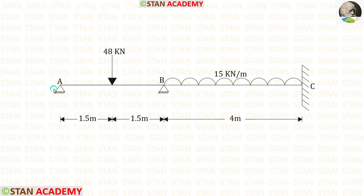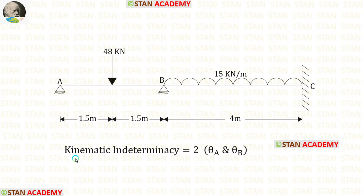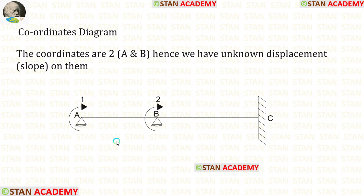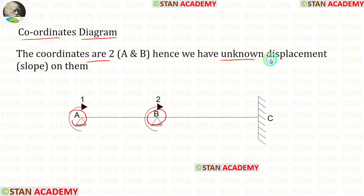In this beam, at points A and B we have hinged supports, so there will be slope at both A and B. The kinematic indeterminacy is two. At point A we have slope theta_A and at point B we have slope theta_B. In the coordinates diagram, there are two coordinates at points A and B, representing the unknown displacements. The coordinates represent moments placed in the clockwise direction.